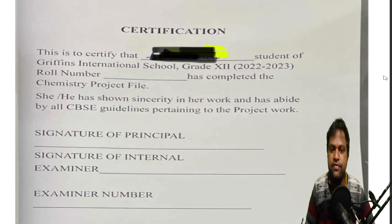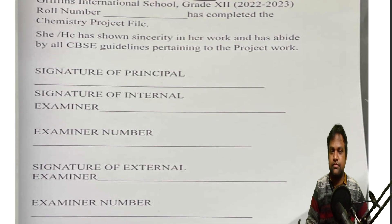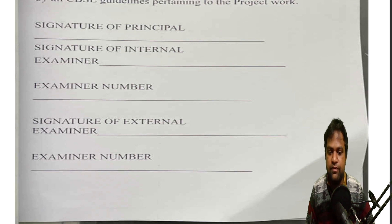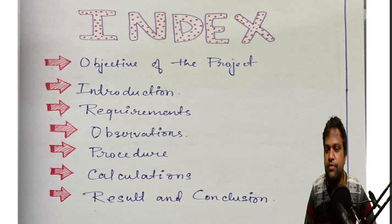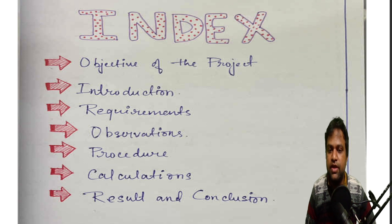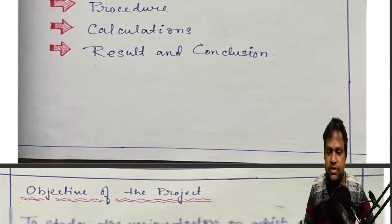After the acknowledgement, you can have the certification. Then the next page will be the index page. In the index page, you can write the contents of your project — your objective, introduction, requirements, observations, procedure, calculations, result, and conclusions. Each main point inside your project can be listed as an index entry.